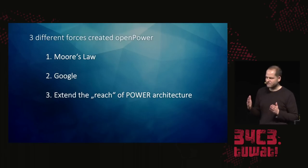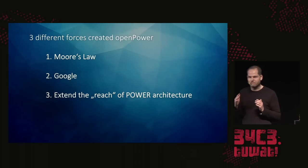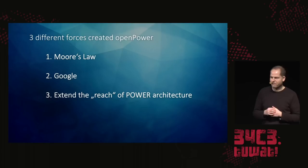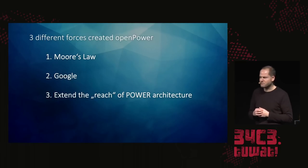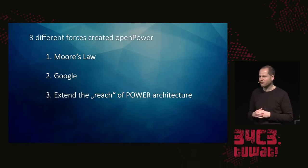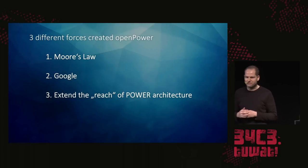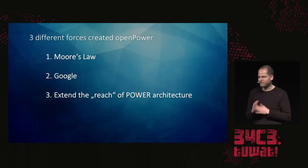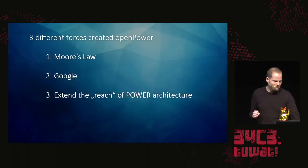Google basically felt they needed to do something else. They want to build their own computers, so they searched for a partner and came to IBM. The third point was to extend the reach of the POWER architecture. In the past there were Power PCs, and the POWER architecture was somewhat stronger, but the overall Unix market is decreasing so fast that it's not working out well. You need to find other means to strengthen the architecture and see how you can work with other parties to get into different markets.